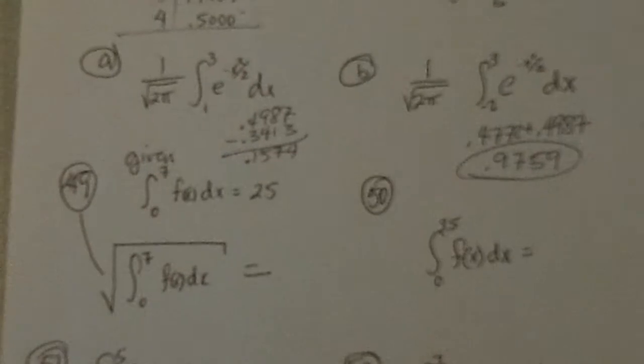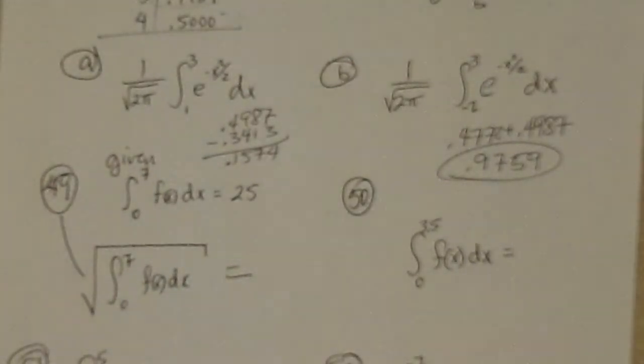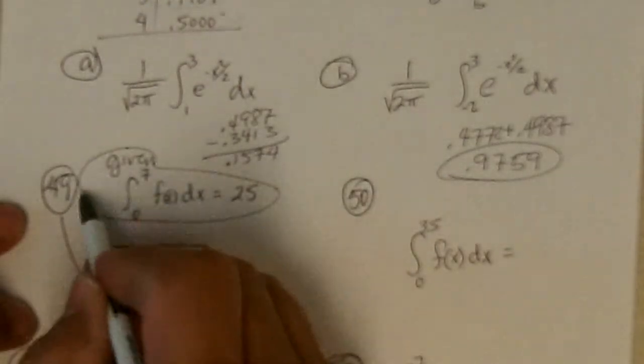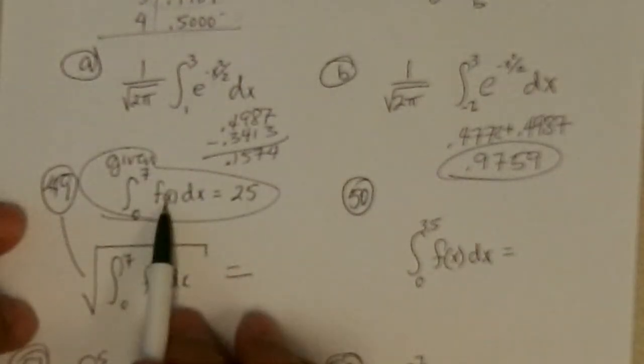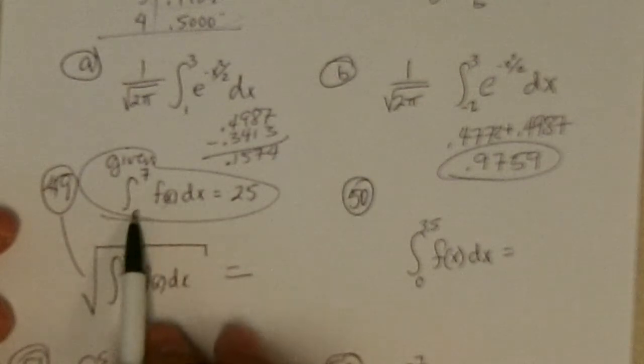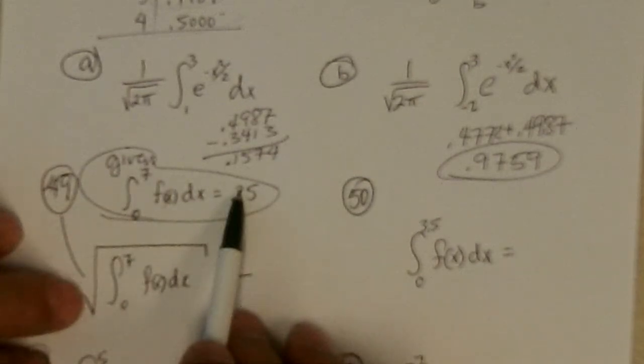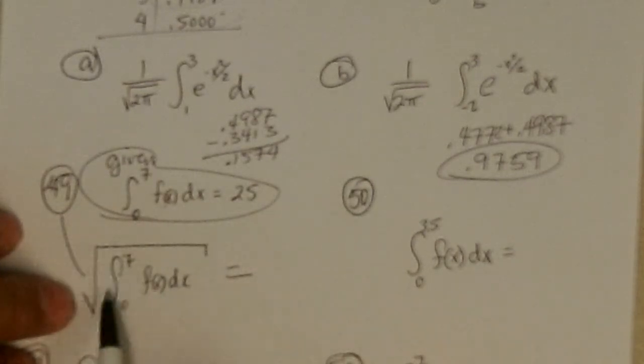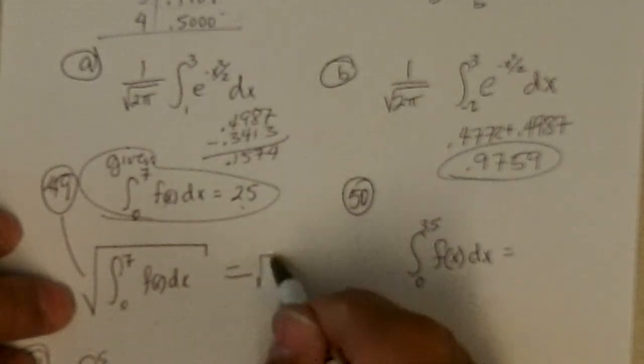49. So on 49, we're given this function. The integral of the function, so the area under the curve from 0 to 7 is 25. So what's the square root of the area from there? So that's just the square root of 25, which is 5.